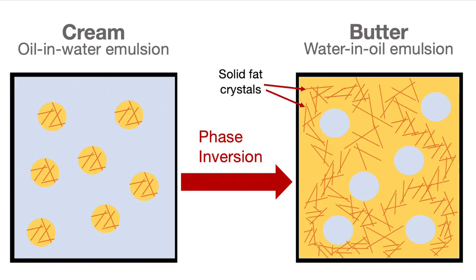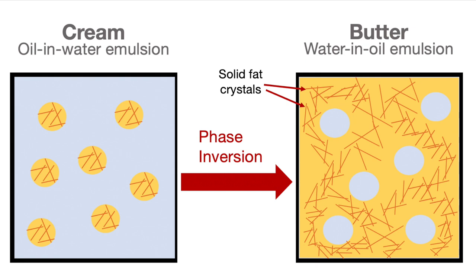What stabilizes this water-in-oil emulsion and gives butter a long shelf life is the solid fat crystals. Originally in cream, the oil droplets held some solid fat; now that the oil is the continuous phase, those crystals are within it. The crystals find each other and link up, forming a large crystalline network within the continuous phase. This network traps the water droplets, stopping them from moving and finding one another — preventing phase separation. It's really the fact that some fat is solid, not all liquid oil, that forms this three-dimensional network of fat crystals and gives butter its long shelf life.